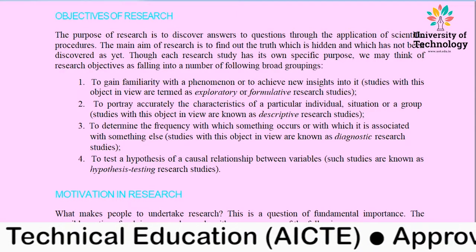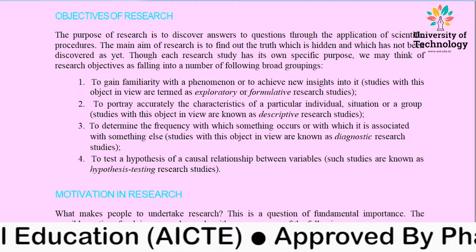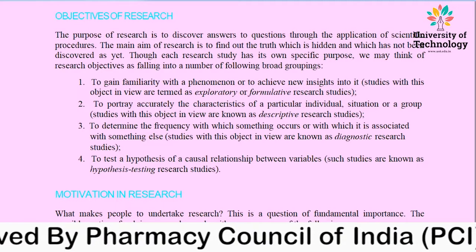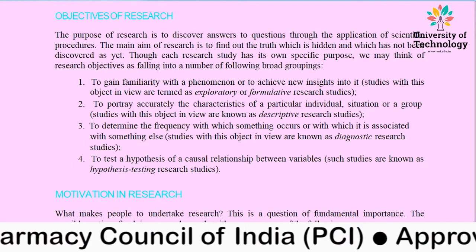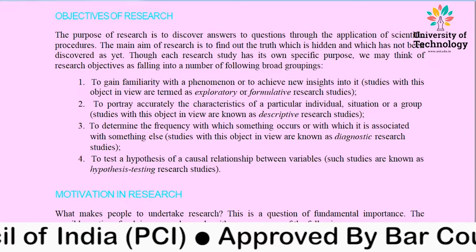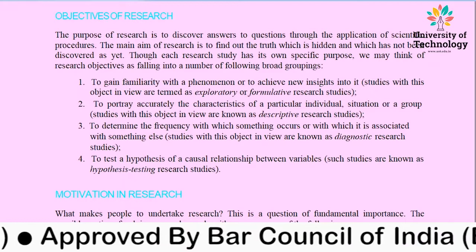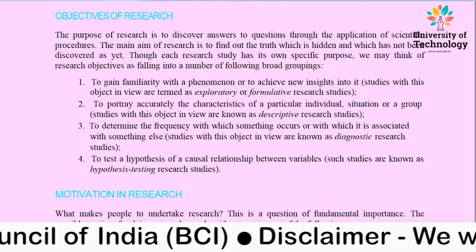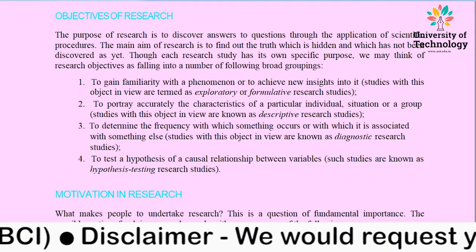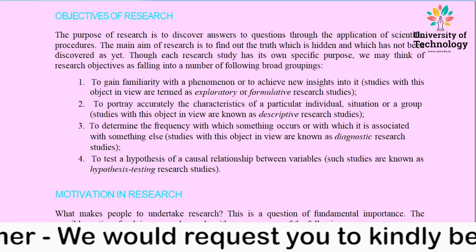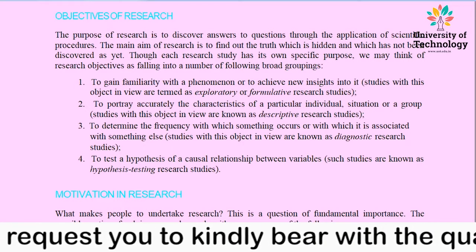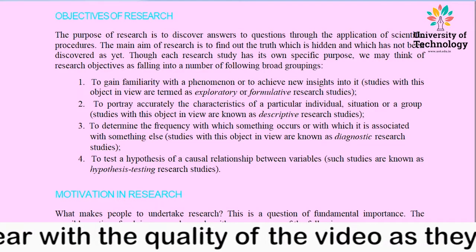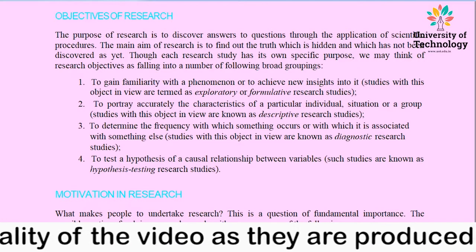The second objective of research is to portray accurately the characteristics of a particular individual, situation, or group. This is a kind of descriptive research. It means you have to analyze all the characteristics associated with a particular research subject, data, or event, going through all the features associated with that particular individual and studying each and every feature. This is known as descriptive research.